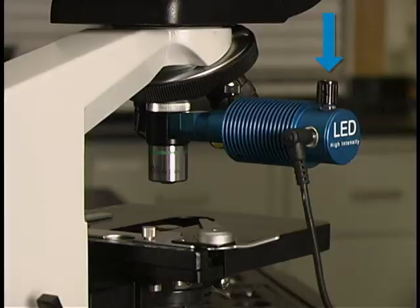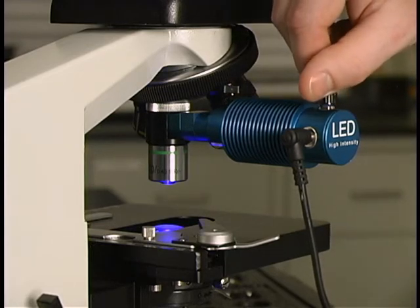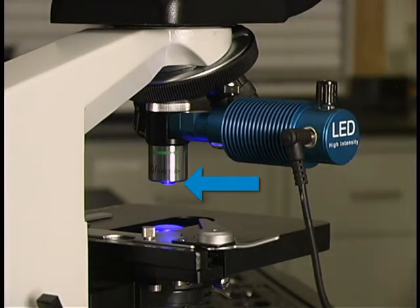Now the Paralens Advance is attached and ready to be turned on. Locate the black intensity knob on top of the LED light source and turn it in a clockwise direction. A light will emanate from your objective, indicating that the Paralens Advance is ready for use.